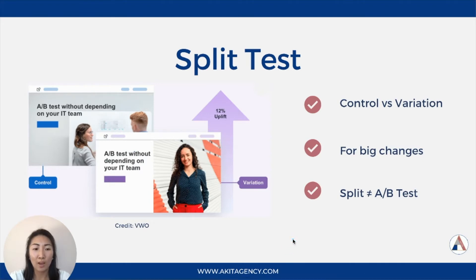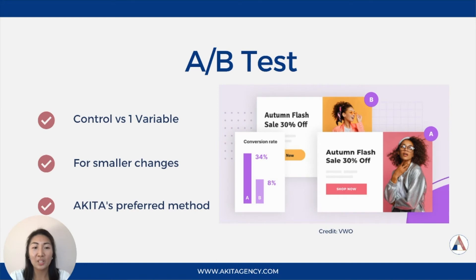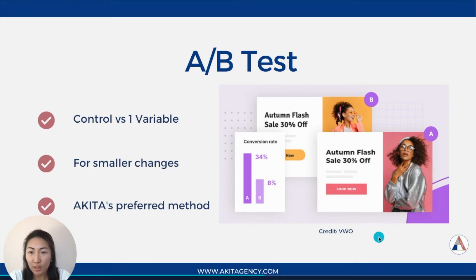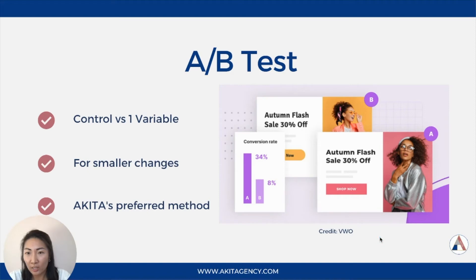The next one we have is A/B testing. A/B testing takes the baseline control sample and compares it to the same sample but with one single thing that you change. This is for testing smaller changes, tweaking things here and there. And this is the usual approach that we use here at Akita. As you can see here in this image, the only thing that has really changed is the image.